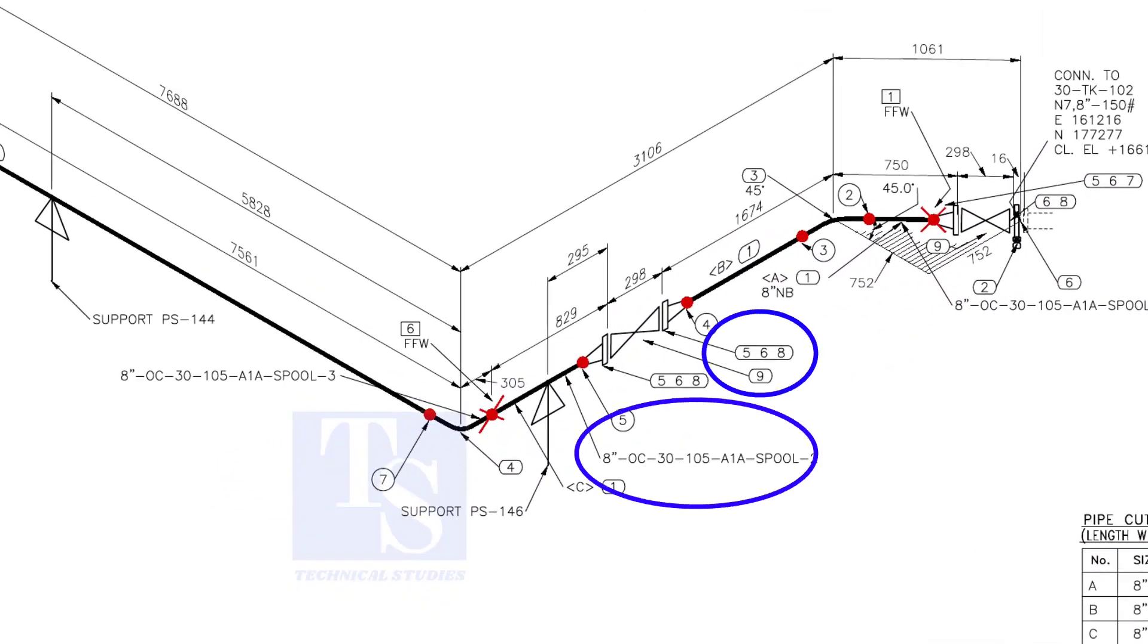In spool number 2, check what are items 5, 6, and 8. We already know item number 1 is pipe.